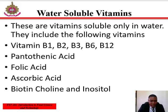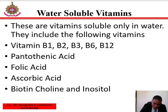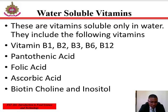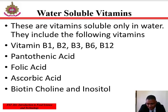Riboflavin, B2, is a fluorescent yellow water-soluble vitamin which plays a vital role in intermediary metabolism. It is used in therapy and prevention of deficiency disease. Niacin, which is vitamin B3, is a vitamin that is made in the human liver by conversion of the amino acid tryptophan. Its deficiency is called pellagra.